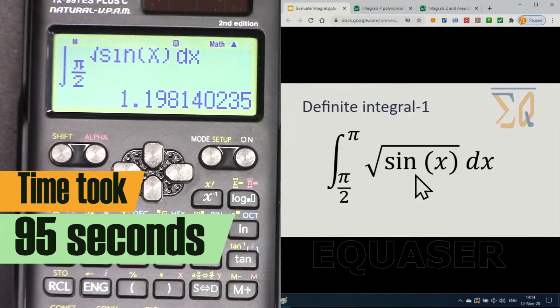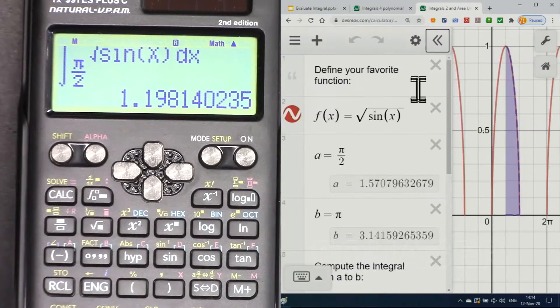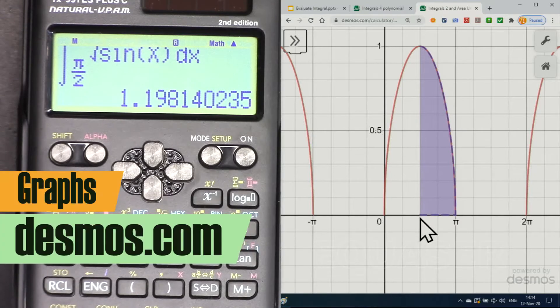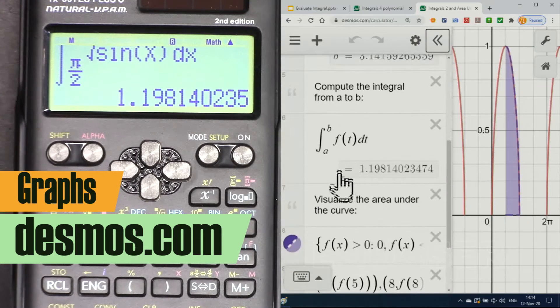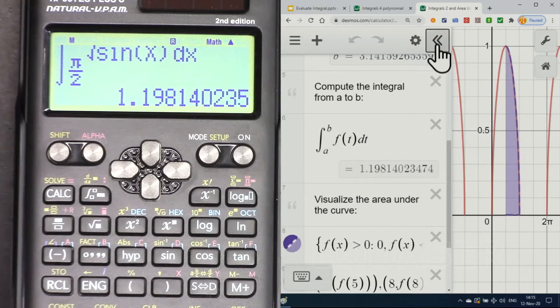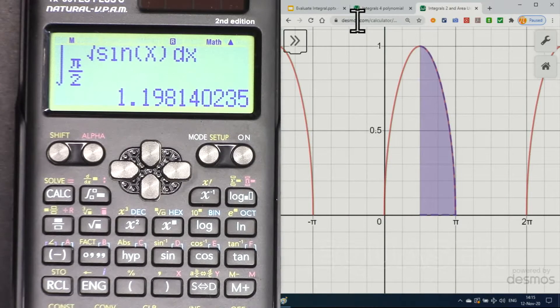This is our function: square root of sine x. And here is the function which we have evaluated from pi over 2 at this point up to pi. Here is the answer: 1.198, which we got 1.198. This plot has been provided from Desmos.com. I will provide you the link below the video in the description. The unit here was radian.